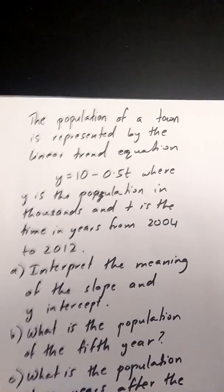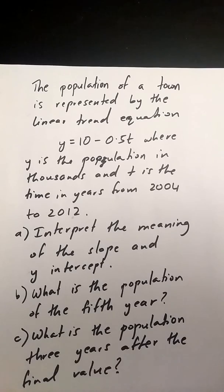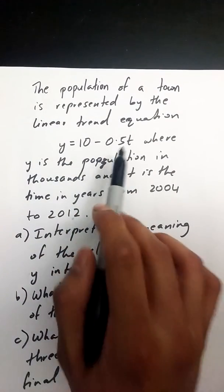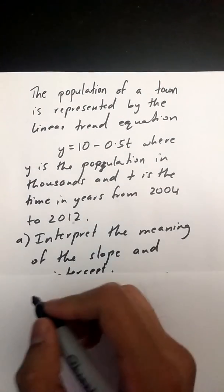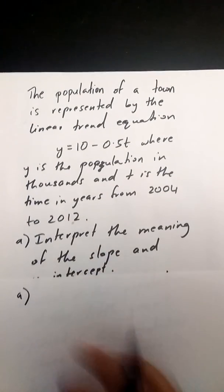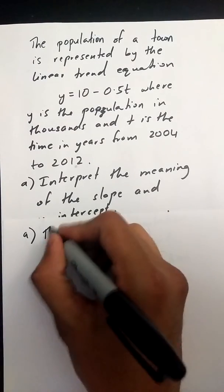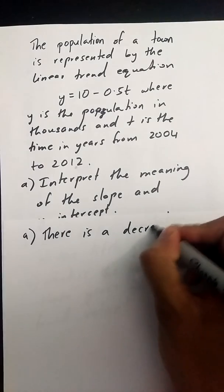The A part of the question asks you to interpret the meaning of the slope and the y-intercept. Okay, so the slope is negative 0.5 in this question, so that means that there is a decrease, since it's negative,